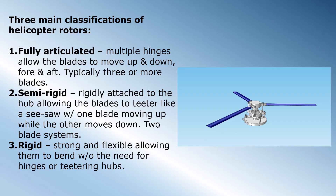The three main classifications of helicopter rotors are: number one, the fully articulated rotor, which has multiple hinges allowing the blades to move up and down and fore and aft, typically used with aircraft with three or more rotor blades; number two, the semi-rigid rotor blades, which are rigidly attached to the hub, allowing the blades to teeter like a seesaw with one blade moving up while the other moves down, utilized in two rotor blade systems; and the rigid rotor blade, which must be strong and flexible to allow them to bend without the need for hinges or teetering hubs.